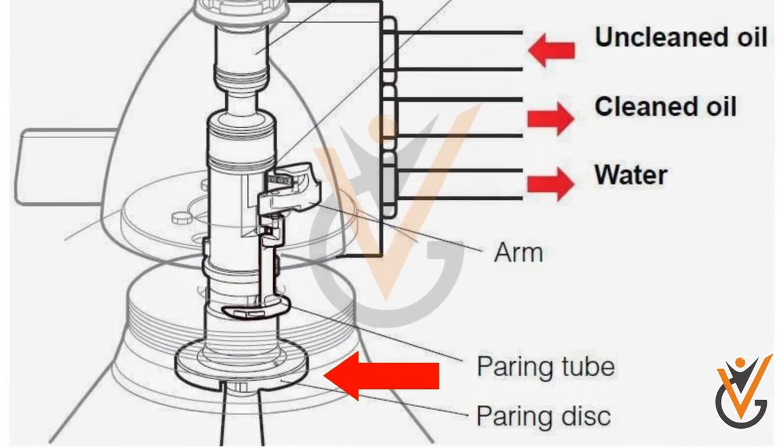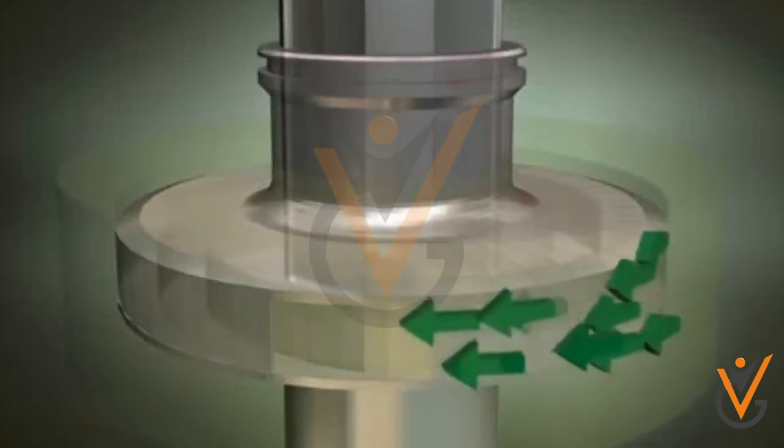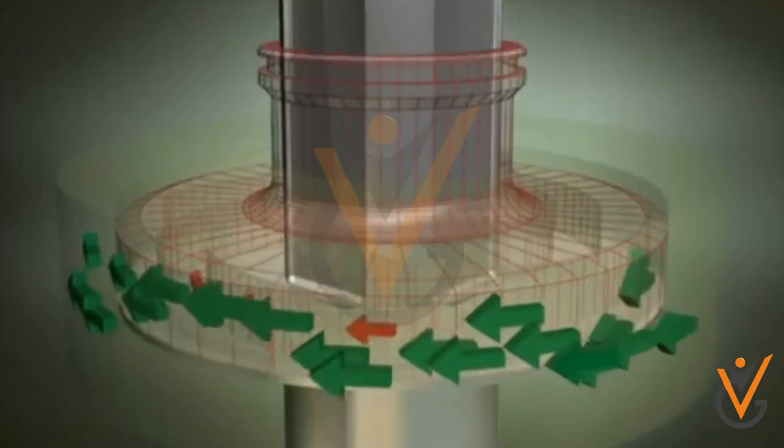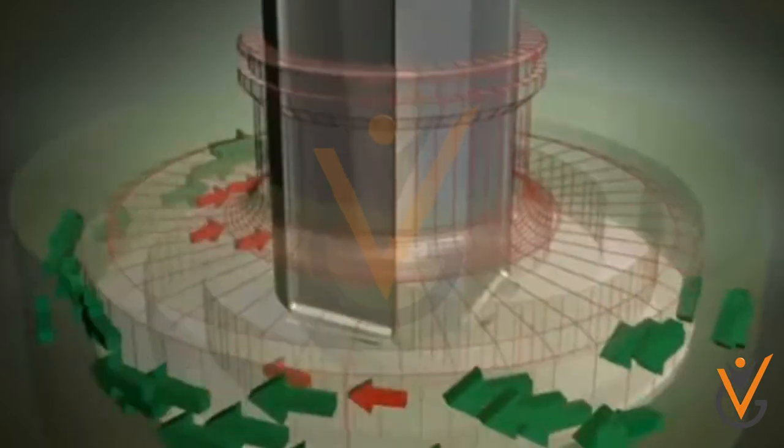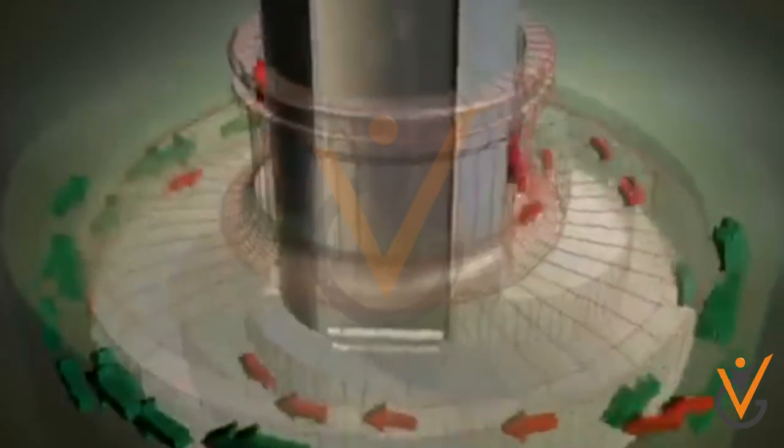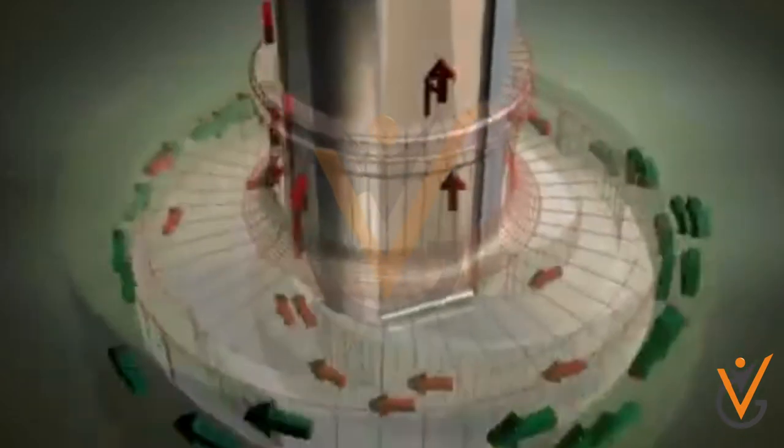Oil pairing disc: It is a stationary impeller mounted in a light phase outlet. Its function is to convert the rotating energy of the liquid into a pressure head. It is also called a centripetal pump.